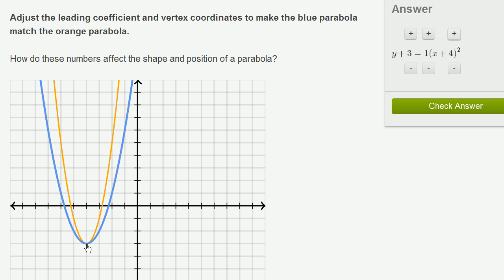This vertex right over here is at the point x equals negative 4, y equals negative 3. And it's no coincidence. Those are the values that make x equals negative 4 makes this 0, and y equals negative 3 makes this 0.